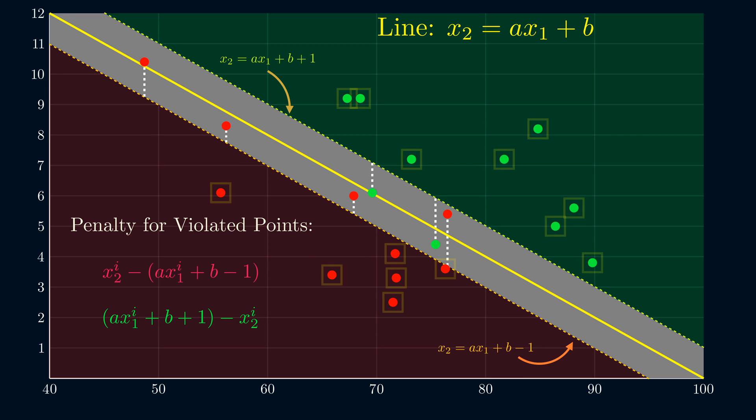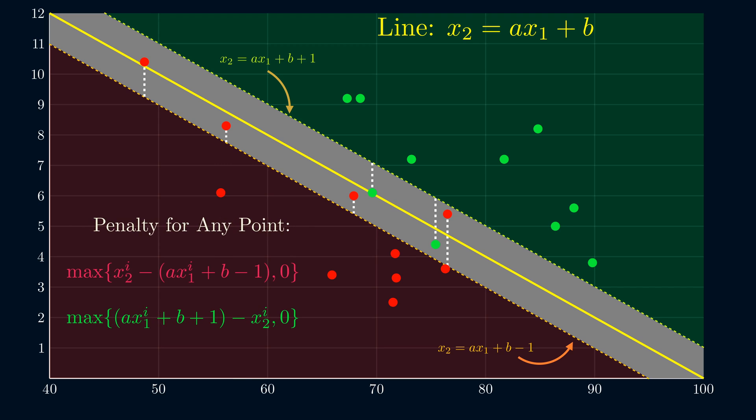We can write the penalty of any point as the maximum of the distance term in zero. This distance term is going to be negative if the point is already in the right region. Then it's just going to be zero.